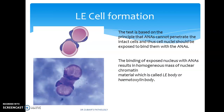The LE cell test is based on the principle that ANAs cannot penetrate the intact cell, so cell nuclei must be exposed to bind with ANAs. The binding of an exposed nucleus with an anti-nuclear antibody results in a homogeneous mass of nuclear chromatin material called an LE body or hematoxylin body. To make an LE cell preparation, blood is churned with a glass rod and glass beads to expose nuclear material, which is then engulfed as a homogeneous mass. This is now a crude, obsolete test since more sensitive anti-nuclear antibody tests are available.